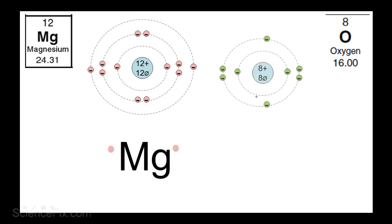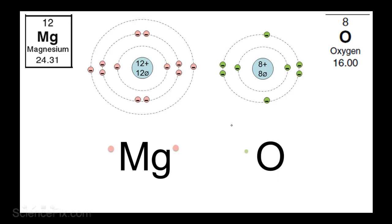Oxygen has 8 positive protons and 8 negative electrons. There's 2 electrons in the first energy level, and 6 in the second. So the electron-dot diagram shows the 6 valence electrons.